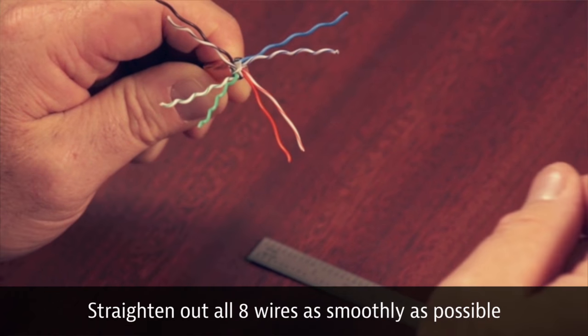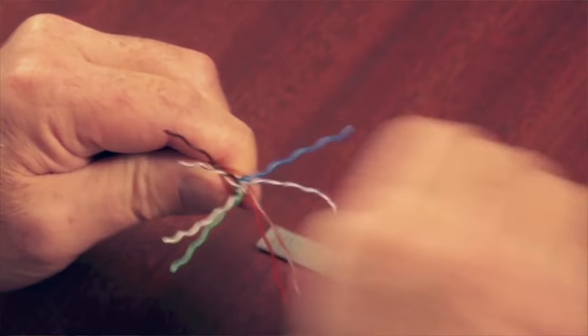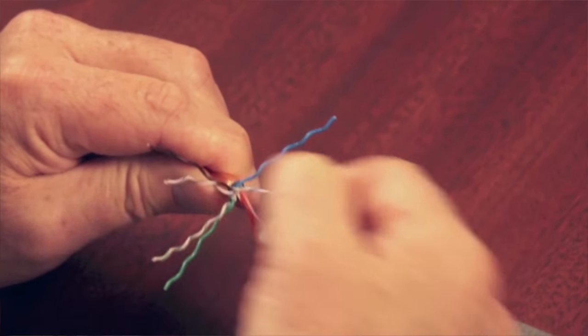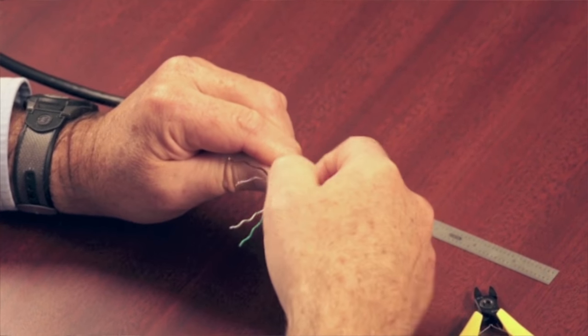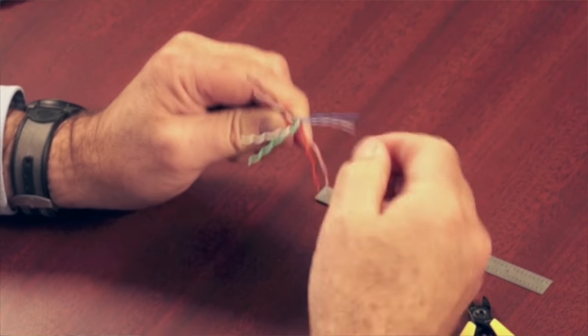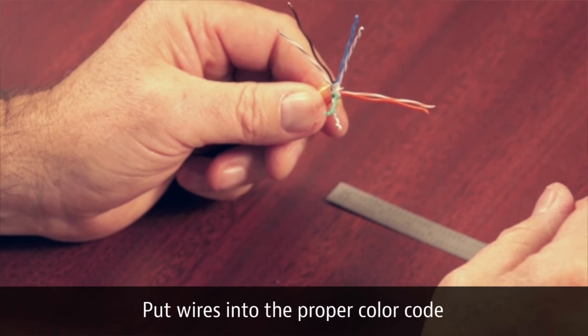Once you've untwisted these, we need to lay these out as smooth as possible. That's why I curve my fingers and pull it a few times to get the convolutions out. This is probably the longest part of the entire termination - making sure that these conductors are nice and straight.